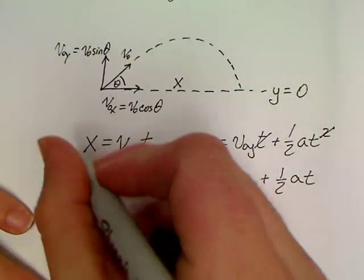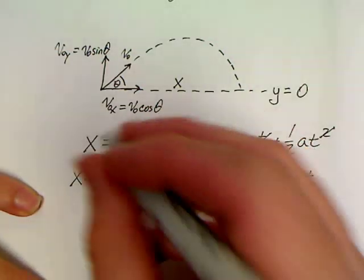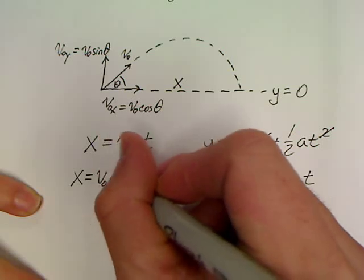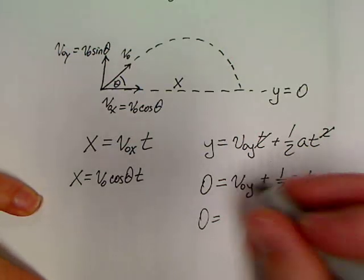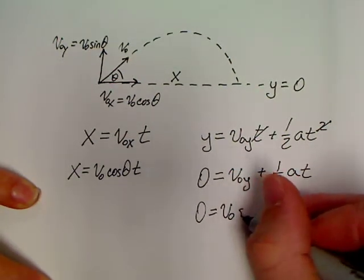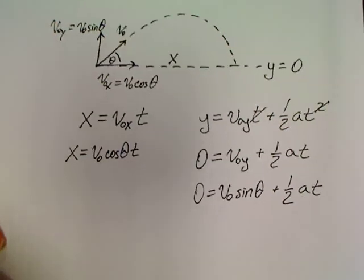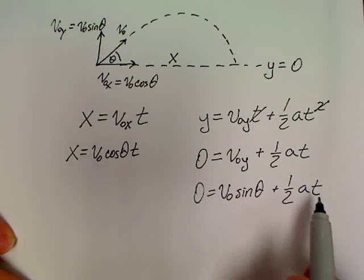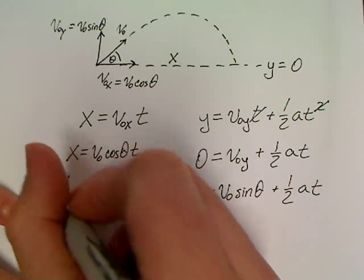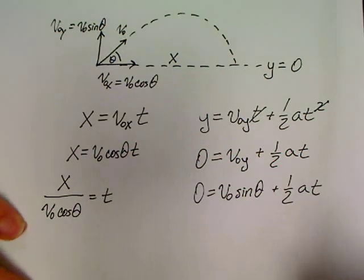Plug all these equations in together. x would be equal to, instead of V0x, we'll plug in V0 cos θ. So, V0 cos θ times t. Over here in the other equation, instead of V0y, we'll write V0 sin θ plus one-half a t. Now, to combine these two equations. This is the simpler of the two equations. So, let's solve it for time and substitute it in here. So, x over V0 cos θ would be equal to time.